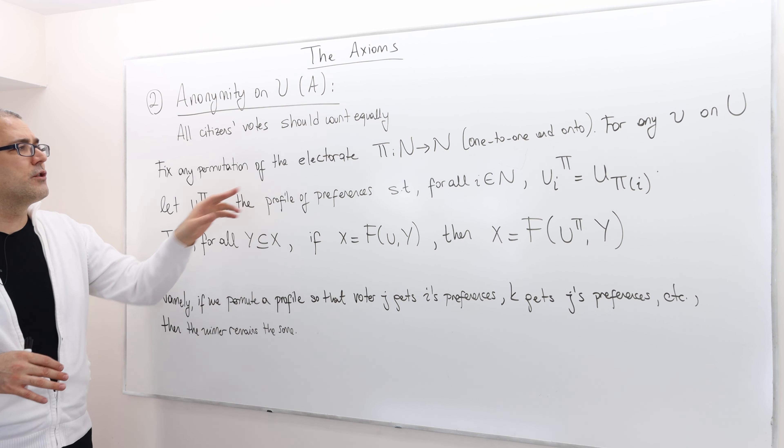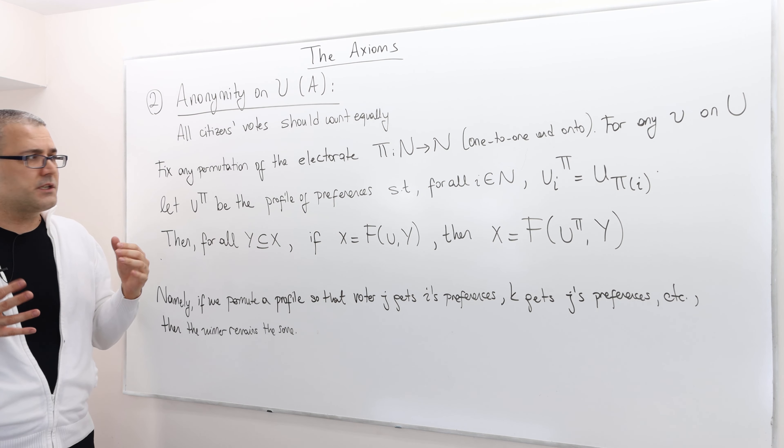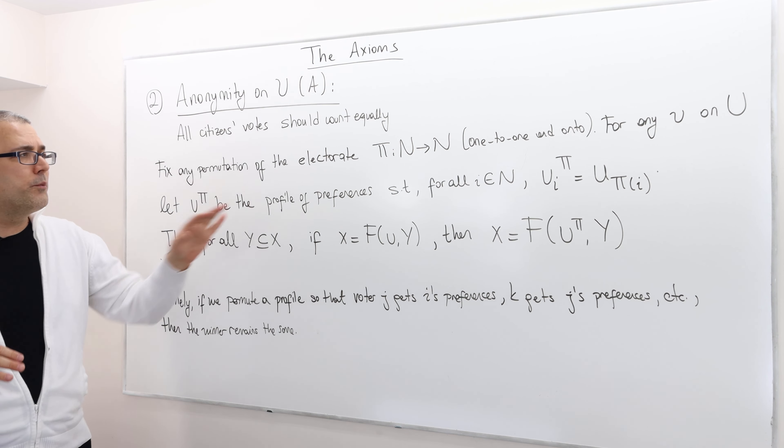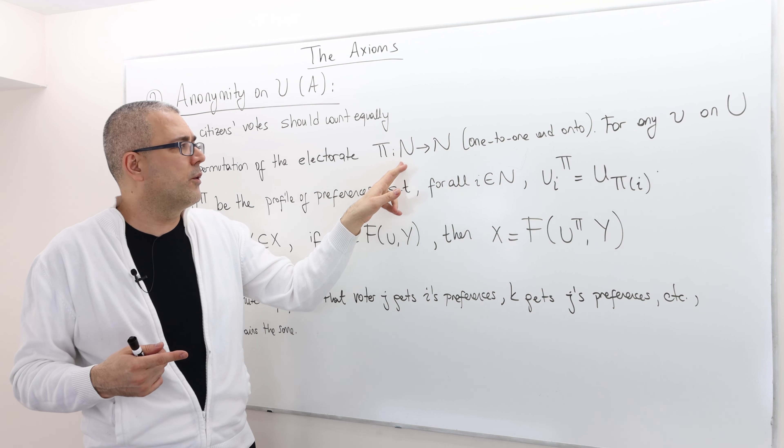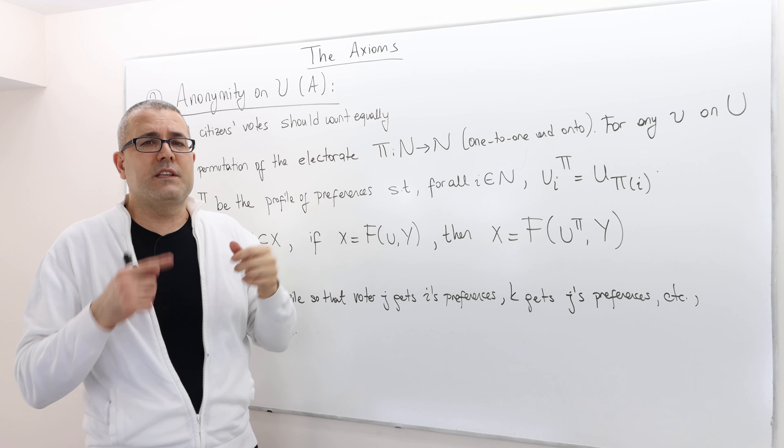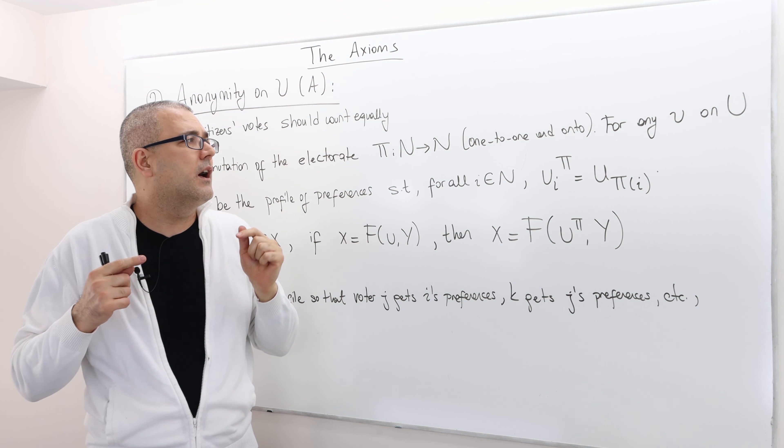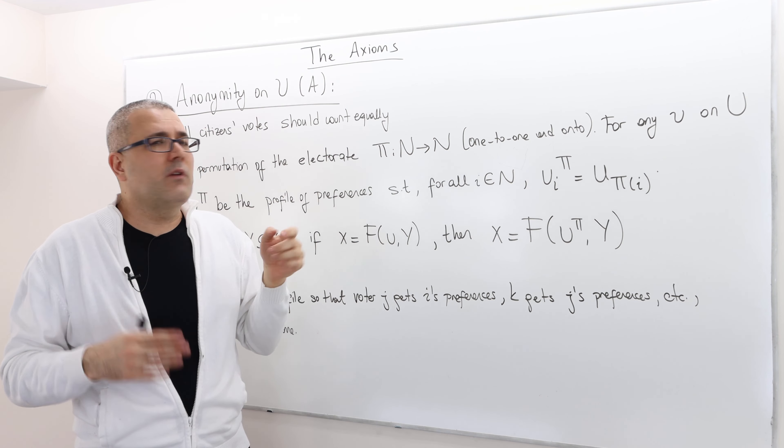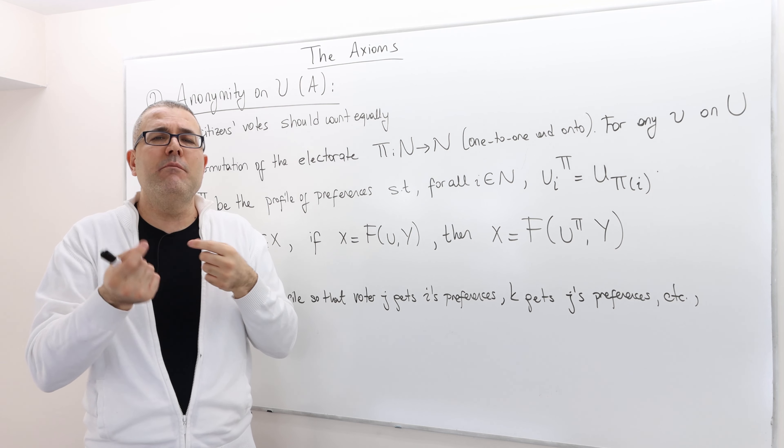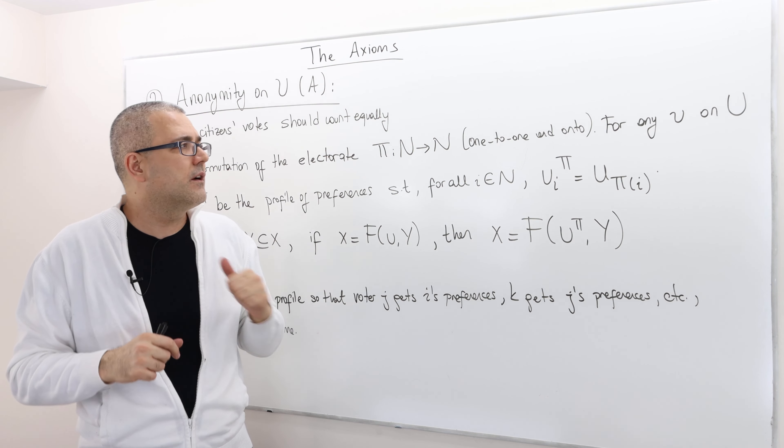Well, fix any permutation of the voters. Remember, the permutation is basically a function from the set of voters to set of voters. It's a one-to-one and onto mapping. So fix any pi. We are going to change the name of the agents.